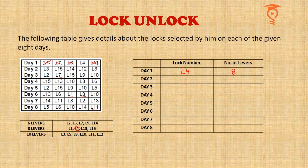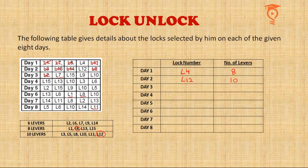On Day 2, L3 appears later, L15 appears later, L14 appears on Day 8, and L8 appears later — so the lock opened on Day 2 must be L12, which belongs to the 10-lever group. On Day 3, L2 is present, but L15, L9, and L10 all appear later, so the lock opened on Day 3 is L7, which belongs to the six-lever group.